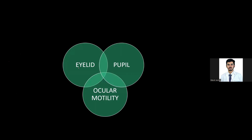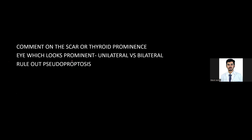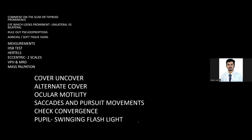To summarize the examination for a case of eyelid or proptosis: first comment on any scar or thyroid prominence; note which eye looks prominent and whether it's unilateral or bilateral; rule out pseudoproptosis; mention adnexal, soft tissue, conjunctival, and corneal signs; then do measurements — Hirschberg test, then Hertel's, Lourdes, or a scale as asked; use two scales for ab-axial proptosis to measure decentration of the central corneal light reflex; measure vertical palpebral fissure height and MRD; palpate if there's a mass; then do cover test, alternate cover test, ocular motility including saccades and pursuit and convergence; and finally the swinging flashlight test. If you've practiced this 10 times before the exam, it becomes quite easy.